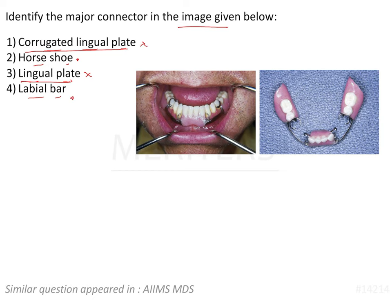Now this may look like a horseshoe because it is U-shaped, but the horseshoe major connector is a maxillary major connector — I will show you those images as well. So here, labial bar, because it is present labially, is the correct answer. Labial bar is not a very preferred option; it is only used when the lingual sulcus is completely out of option because of torus, inadequate sulcus depth, or high floor of mouth, as it is uncomfortable to the patient and hampers speech and aesthetics.